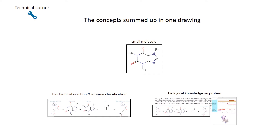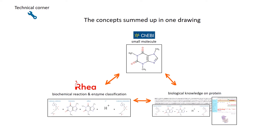How is all this data related and how can it be brought together in a useful way? UniProt is doing this by using the small molecule data from ChEBI to curate reactions in the RIA database, and to then attach these reactions to proteins in the UniProt knowledge base.